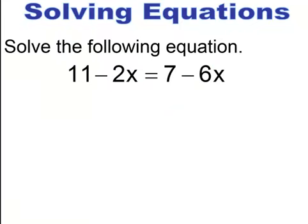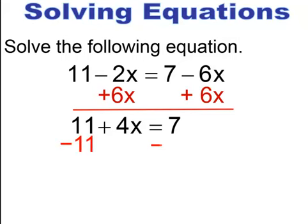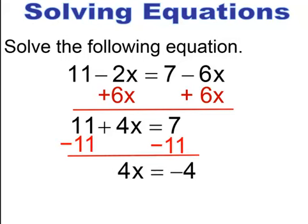It doesn't matter which side you choose to move the variable to. I chose to move the 6x over — because it's minus 6x, I add 6x to both sides. Make sure you add it to the other variable, and you're left with 11 plus 4x equals 7. Subtract 11 from both sides to get 4x equals negative 4, then divide through by 4 to get x equals negative 1.